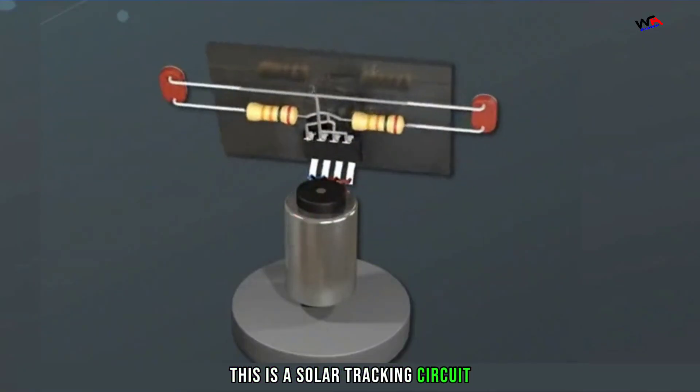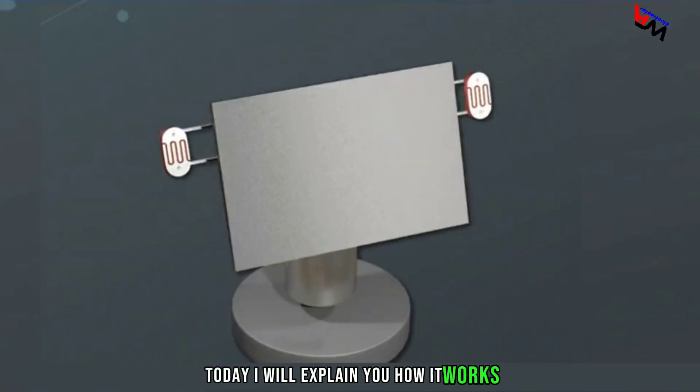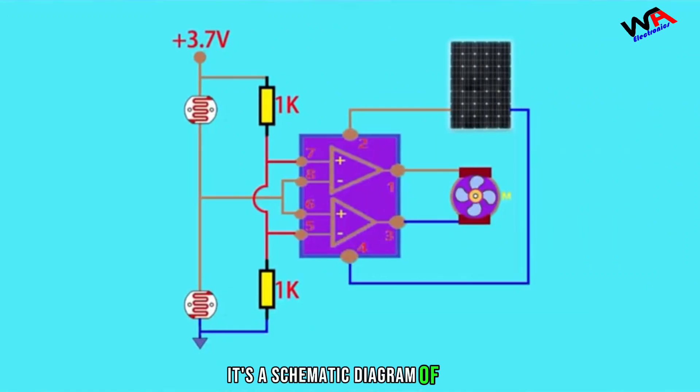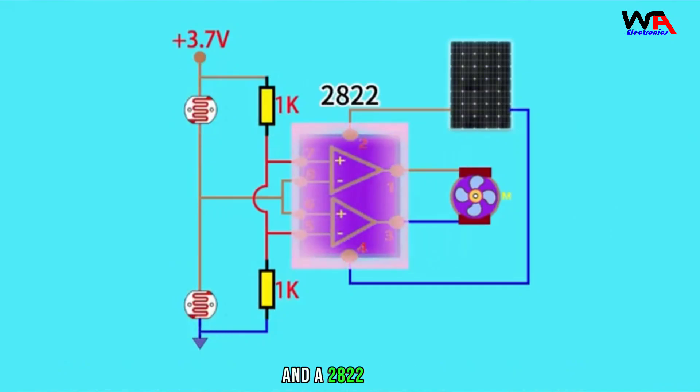This is a solar tracking circuit. Today I will explain you how it works. It's a schematic diagram of this. It has two 1,000-ohm resistors, two photoresistors, and a 2822 IC chip.